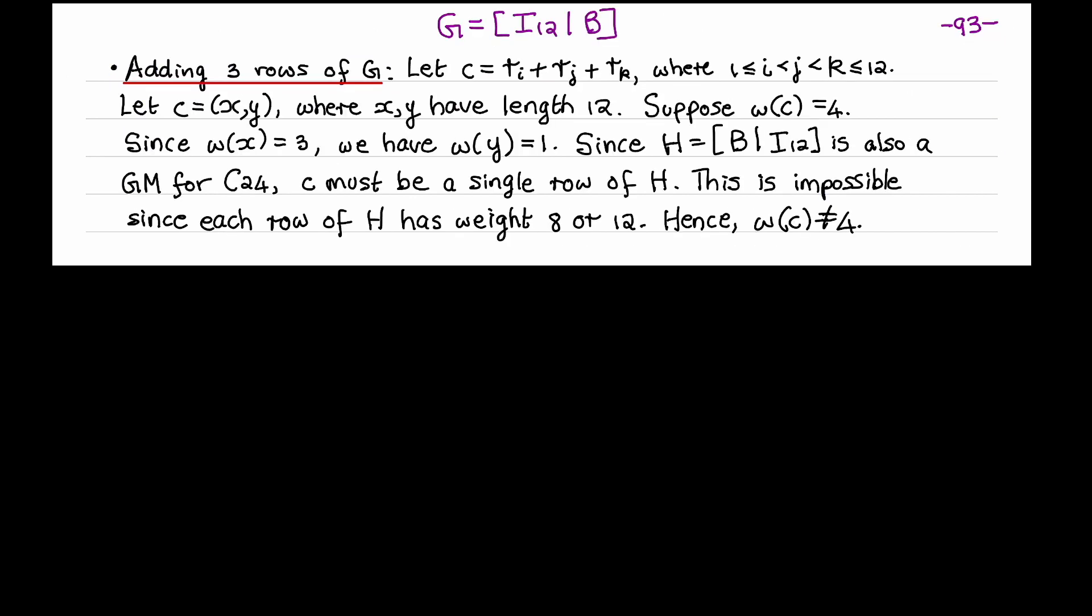Now, let's add any three rows of G together. I'll let these rows be ri, rj, and rk. Let the resulting codeword C be divided into two halves x and y. So x and y are bit strings of length 12. Suppose that the codeword C has weight 4. Now, x was obtained by adding three rows of the identity matrix. So its weight is 3. Hence, y has weight 1. Now recall that this PCM for C24 is also a GM for C24. And so this codeword C can be obtained as a linear combination of some of the rows of H. Since the right half of C has weight 1, C must be equal to a single row of H. But that's impossible, since every row of H has weight 8 or 12. So we conclude that the weight of C can't be 4.